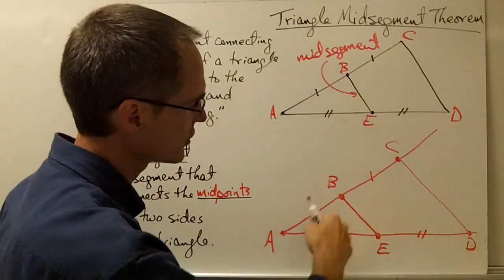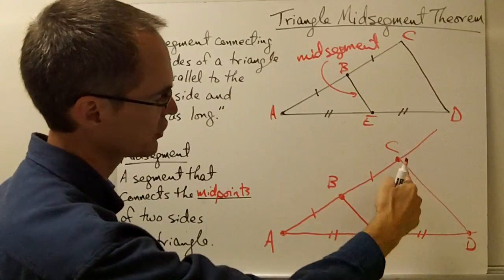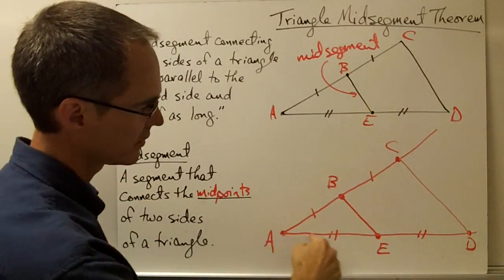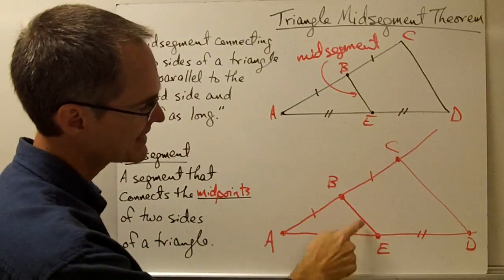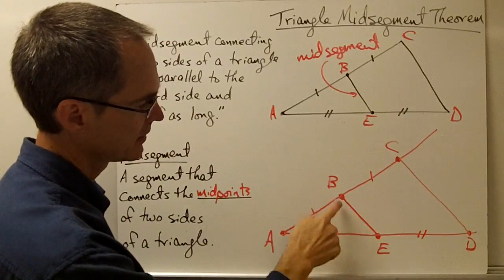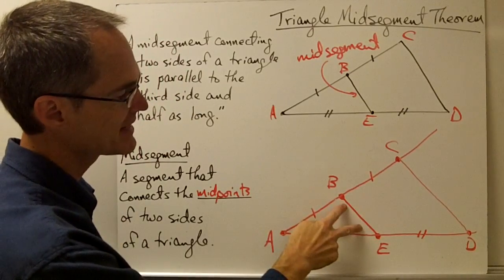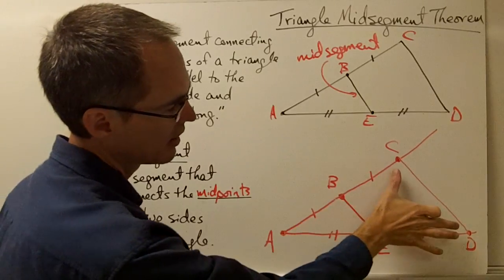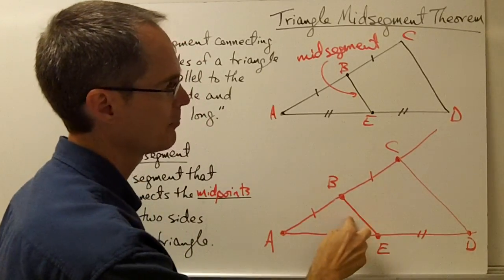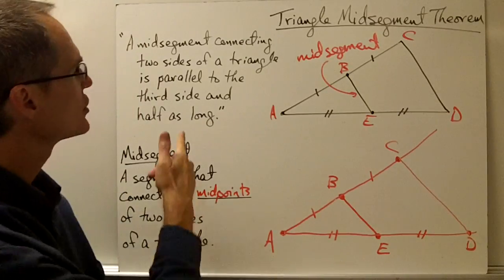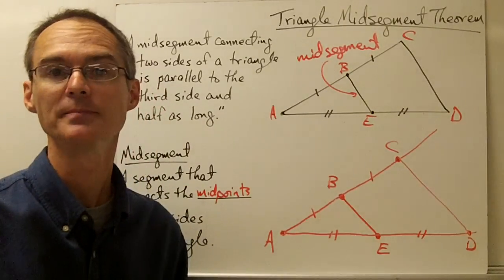This picture is essentially the same as the triangle picture. This is a picture of triangle ACD with a mid-segment connecting the mid-points of two sides, and that mid-segment is half as long as the third side and parallel to it. So we've just proven the triangle mid-segment theorem.